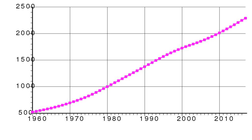According to the 2017 revision of the World Population Prospects, the total population was 2,250,260 in 2016, compared to only 413,000 in 1950. The proportion of children below the age of 15 in 2010 was 32.6%, 63.4% was between 15 and 65 years of age, while 4% was 65 years or older.